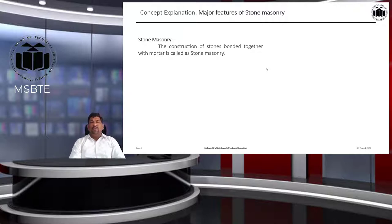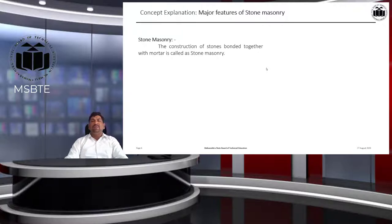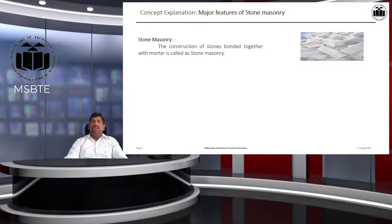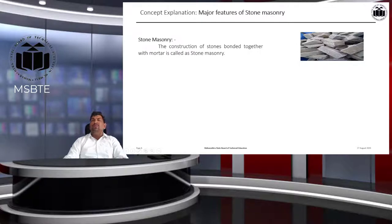The definition of stone masonry: the construction of stones bonded together with mortar is called stone masonry. The stones are generally available from natural sources.